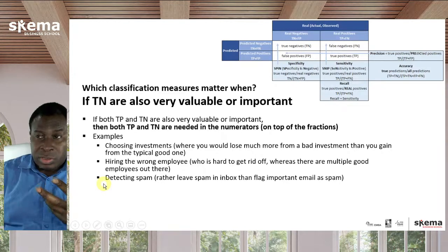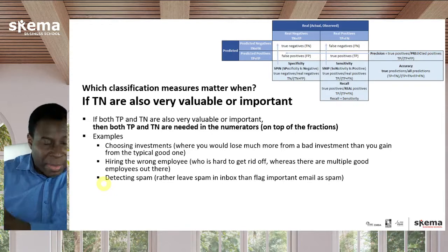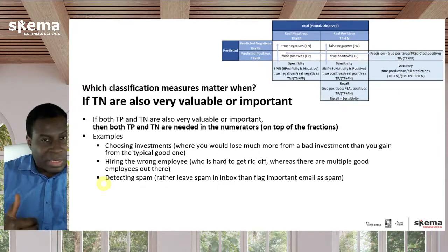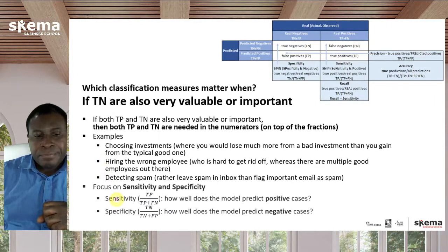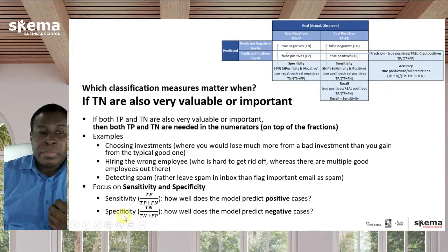Another relatable example is detecting spam. A true positive is when the spam filter correctly identifies a spam email and puts it in your spam box, but you also care about true negatives: correctly identifying legitimate mail and leaving it in your regular inbox. Because both true positives and true negatives are important in these scenarios, you want to focus on both sensitivity and specificity — sensitivity measures how well the model predicts positive cases, and specificity measures how well it predicts negative cases.